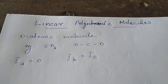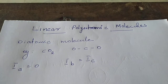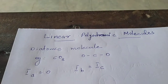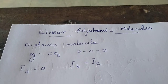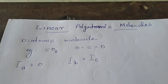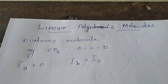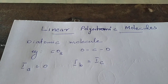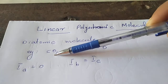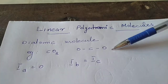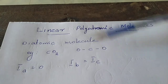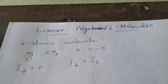Good morning. In Infrared Spectroscopy, the next topic is linear polyatomic molecules. Diatomic molecules were discussed using HF as an example. Polyatomic molecules means more than two atoms. Linear polyatomic molecules — for example, CO2 — consist of carbon and two oxygen atoms arranged in a linear manner, making CO2 an example of a linear polyatomic molecule.